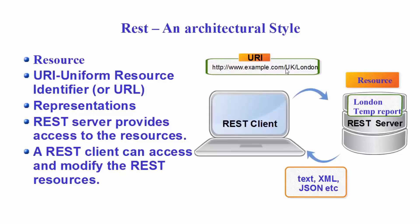In REST architecture, you must have a URI to access or modify a resource. For example, the URI might be UK/London to identify that resource on the REST server. These URIs should be descriptive — human-readable and structured. If you want the temperature of Munich in Germany, you would write Germany/Munich. The structure is: country name, then city name.